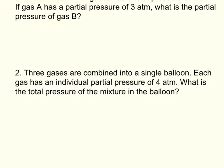So here are two example problems that you could see that you would have to be able to solve. Number one: a tank filled with two gases has a total pressure of 8 atm. If gas A has a partial pressure of 3 atm, what is the partial pressure of gas B?